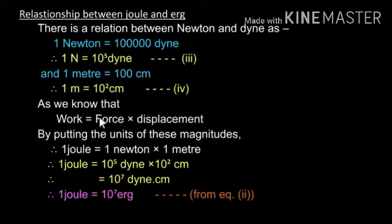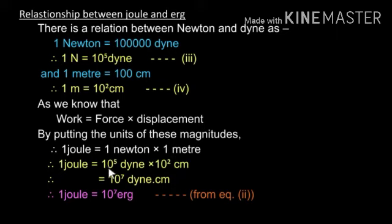Since work equals force into displacement, putting the units of these magnitudes into equation number 1, we get: 1 Joule equals 1 Newton into 1 meter. Now substituting, 1 Newton equals 10 raised to 5 dyne and 1 meter equals 10 raised to 2 centimeters. Therefore, 1 Joule equals 10 raised to 5 dyne into 10 raised to 2 centimeters, which gives 10 raised to 7 dyne centimeter. Since dyne centimeter equals erg, we get: 1 Joule equals 10 raised to 7 erg.